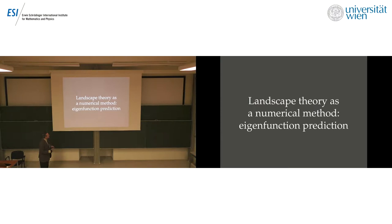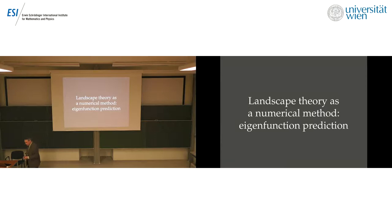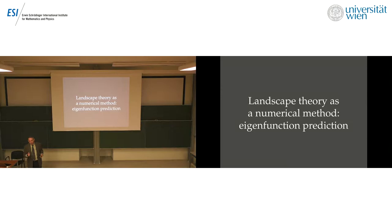The landscape function contains a lot of information about localization. Can that give us a way to compute eigenvalues and eigenfunctions? Computing many eigenfunctions of a PDE is much more difficult than solving the PDE. Instead of computing all eigenfunctions, we solve one PDE — the landscape equation — take its reciprocal, and try to exploit that to get the eigenfunctions. That is what I'll talk about for the rest of the talk.